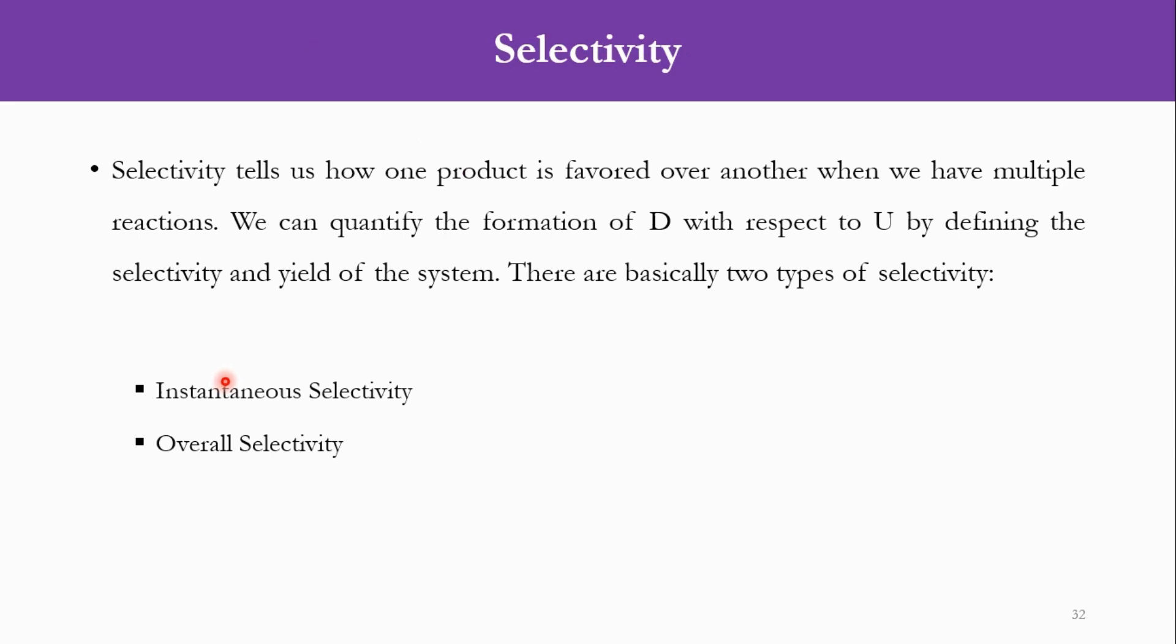So talking about Selectivity, it tells us how one product is favoured over another when we have multiple reactions in the system. In the previous lecture, I told you that multiple reactions are very common in real time scenarios, single reactions are very rare in the system. So once there are multiple reactions, obviously you have multiple products and among these there will be desired products and some undesired products. We have to economically see that our desired product is in maximum quantity and the undesired product is in minimum quantity. So Selectivity is one of the parameters which tells us how one product is favoured over another in case of multiple reactions.